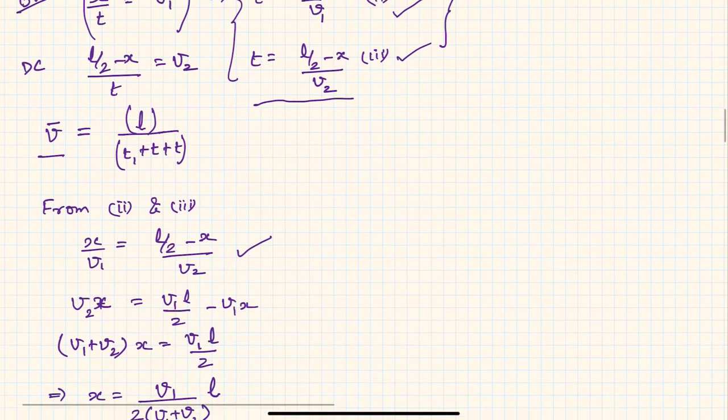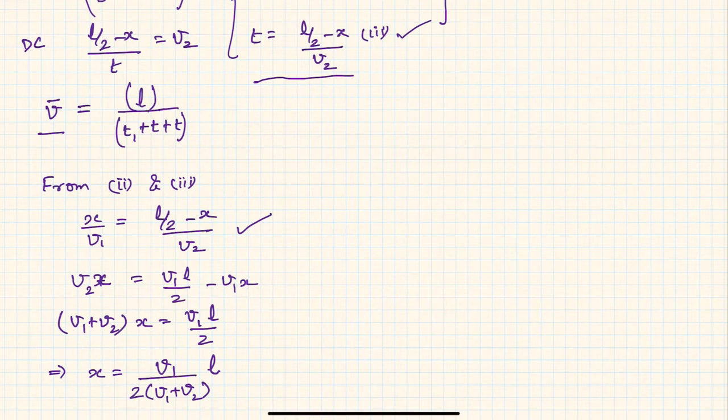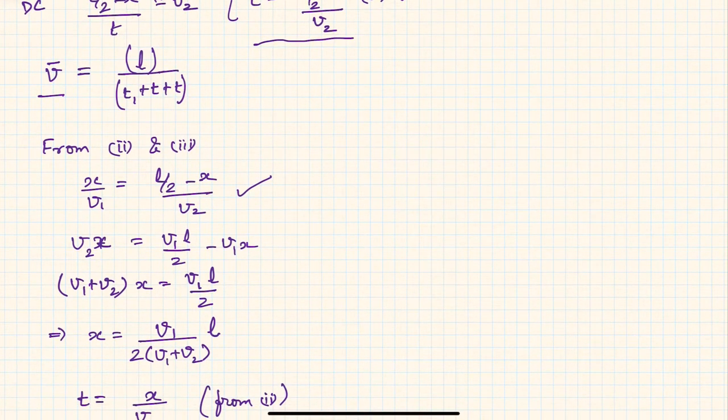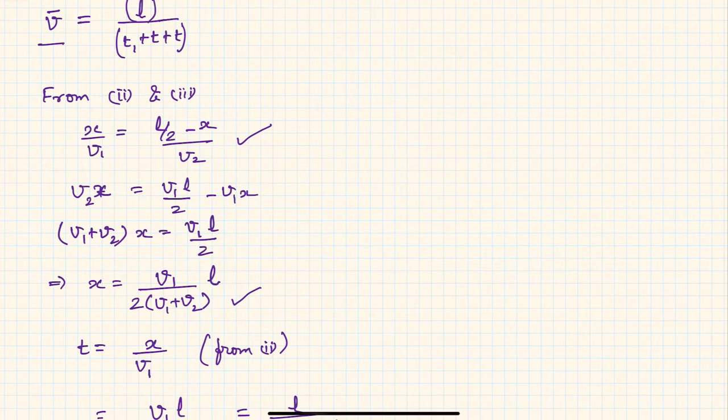you will get x equals v1 upon (v1 l upon 2(v1 + v2)). So hence t is nothing but x by v1.